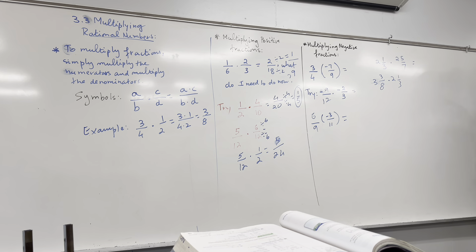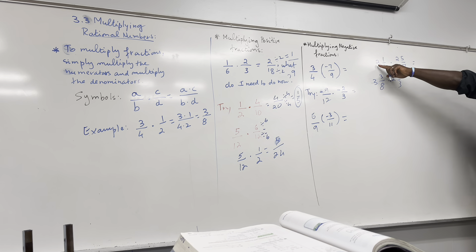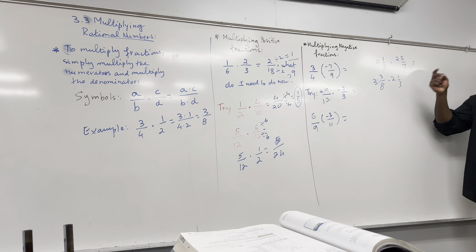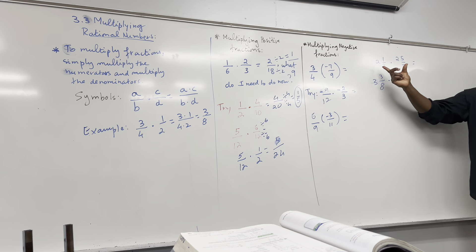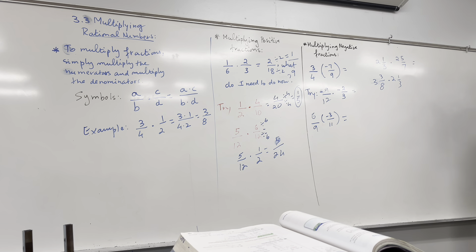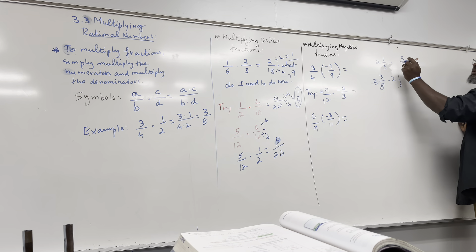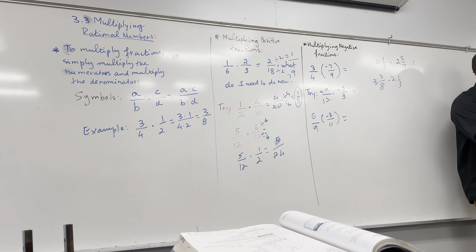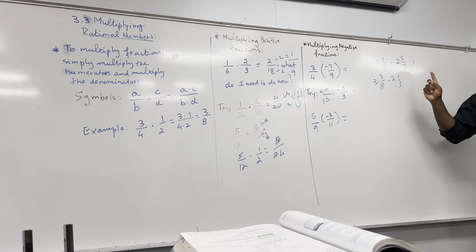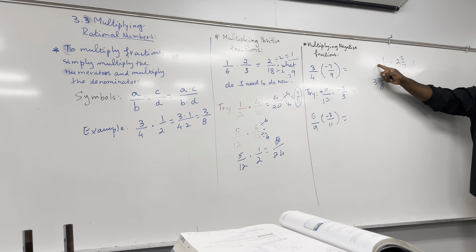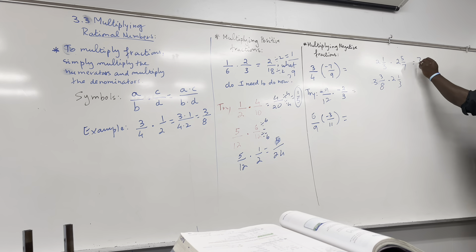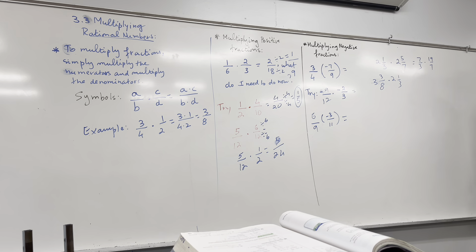Let me show you another approach — the cross-cancellation method, sometimes called the butterfly method. With six over nine times negative three over 11: three goes into six leaving two, and three goes into nine leaving three. Then those threes cancel, leaving one and one. So you have two times negative one over 11, which is negative two over 11. If this feels like too much in your head, just use the step-by-step traditional way — either method is fine.